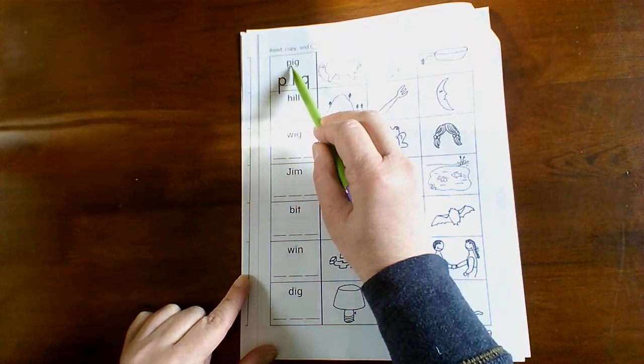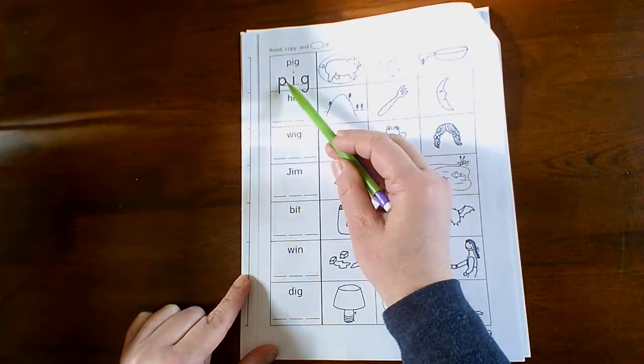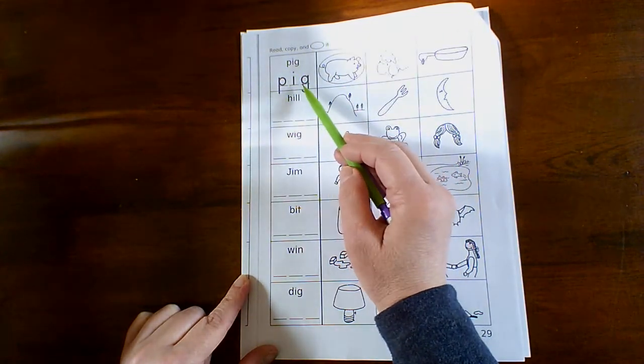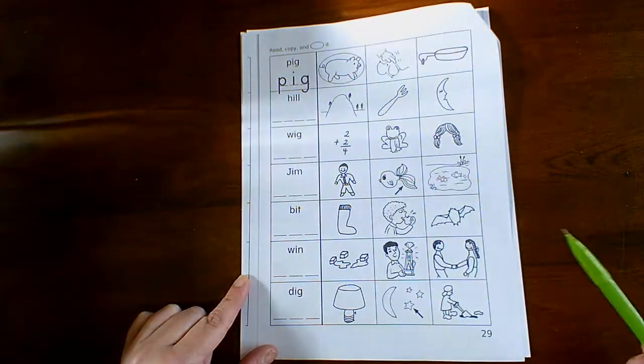So do it slow. P-I-G. And then do it fast. Pig. And then write it. So say it slow, then write it, and then circle the picture of it. So pig. And circle the picture.